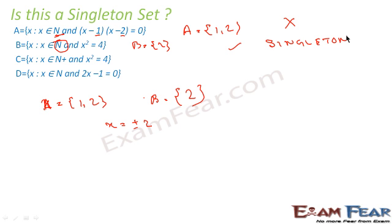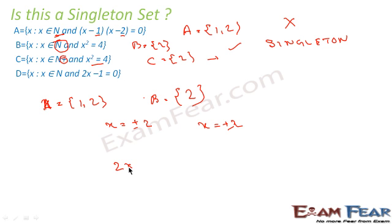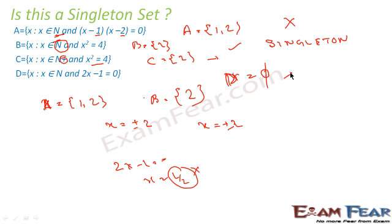For set C, x is a positive natural number and x² = 4, giving x = ±2. Taking only the positive natural number, C = {2}, so C is also a singleton set. For set D, x is a natural number and 2x − 1 = 0, giving x = 1/2. Since 1/2 is not a natural number, D has no elements and is not a singleton set. Summary: A is not singleton, B is singleton, C is singleton, and D is not a singleton set.